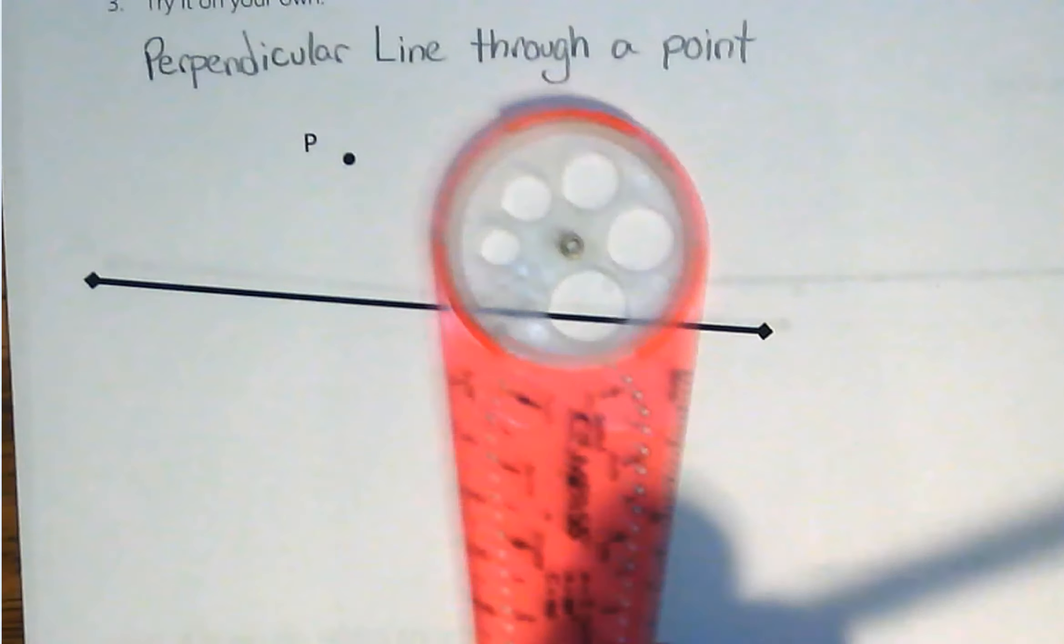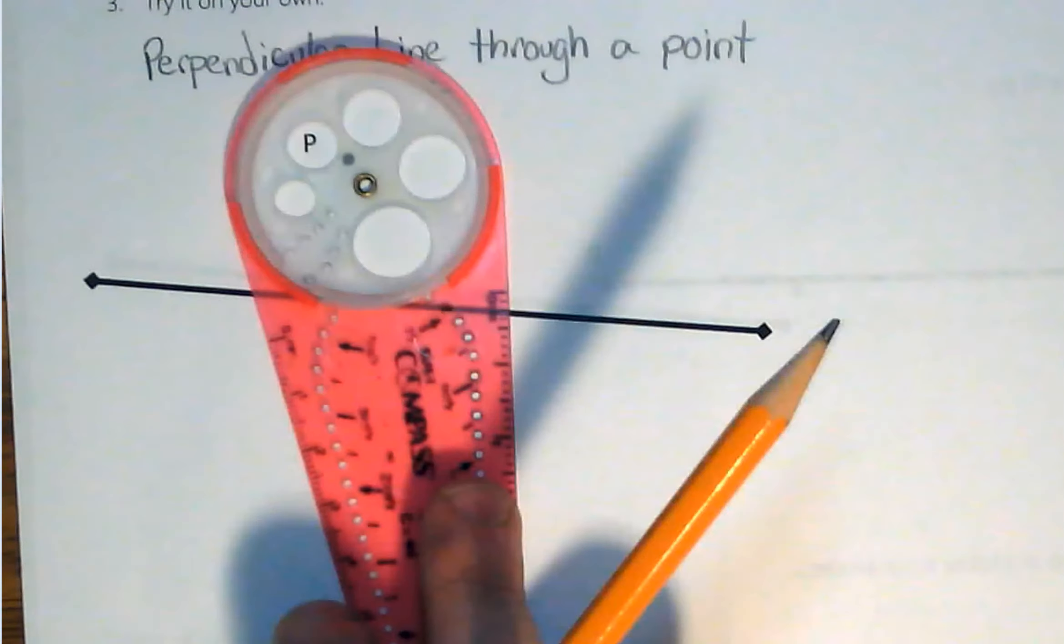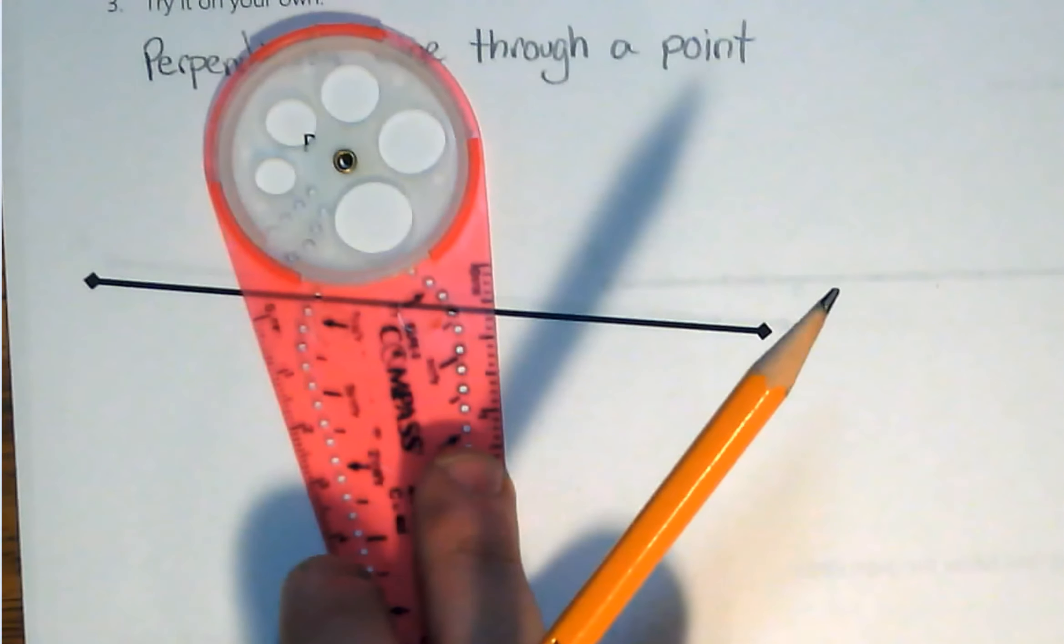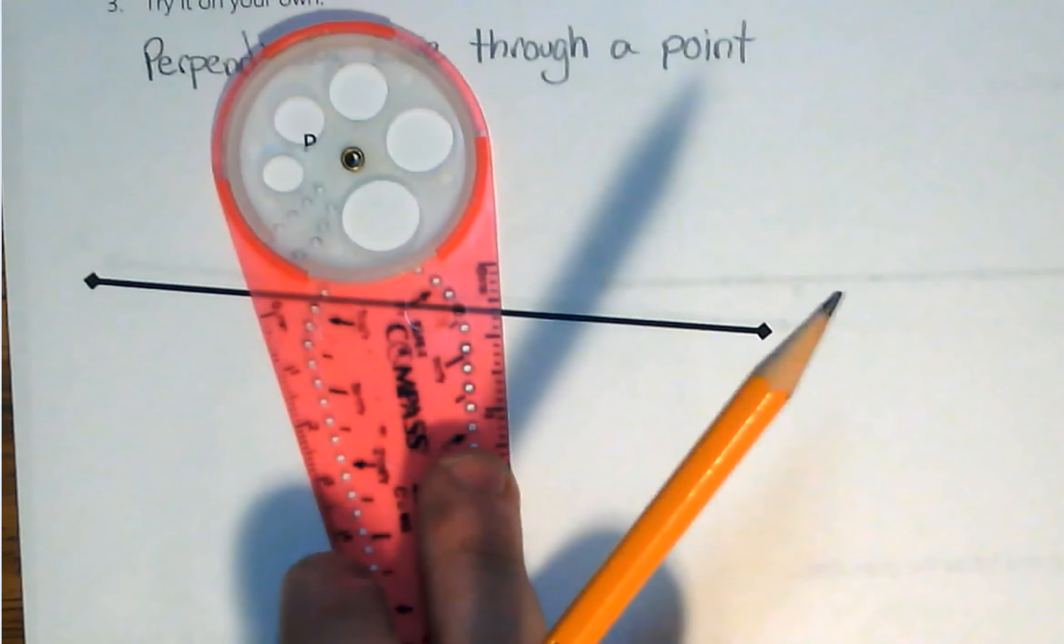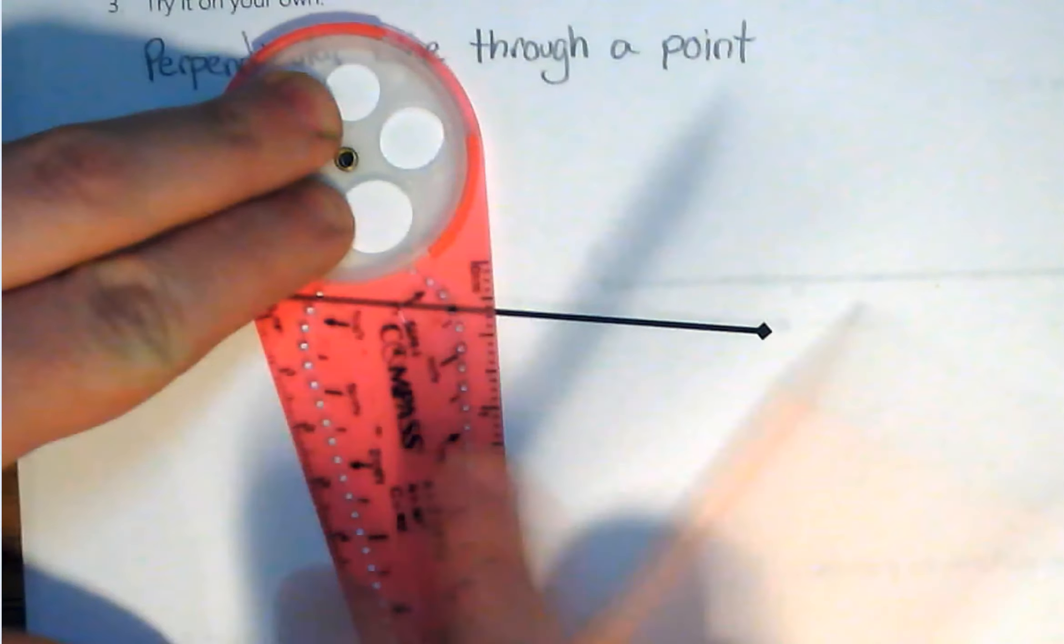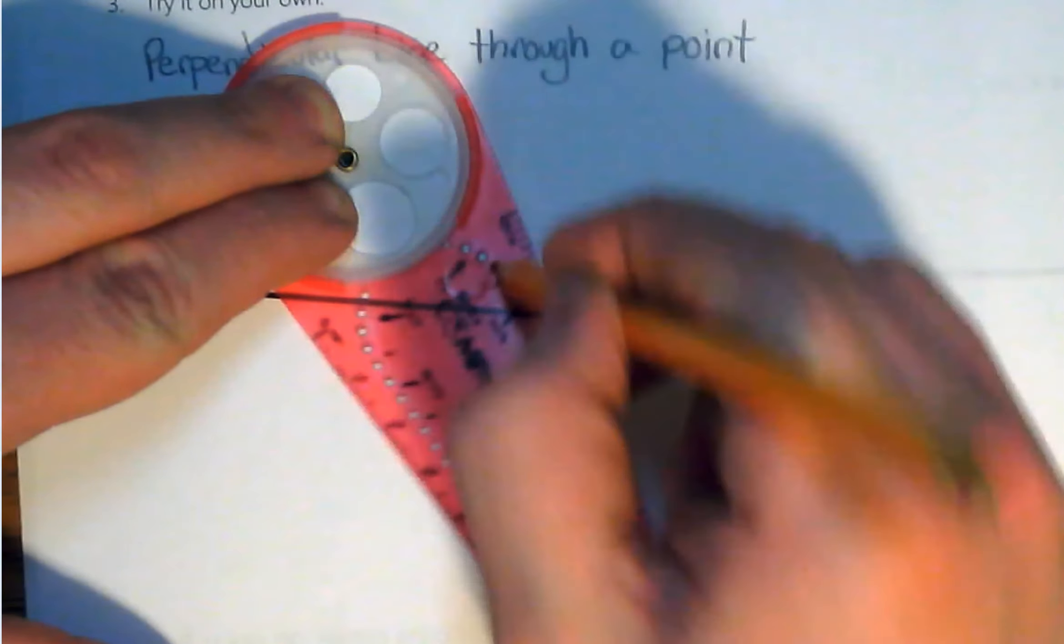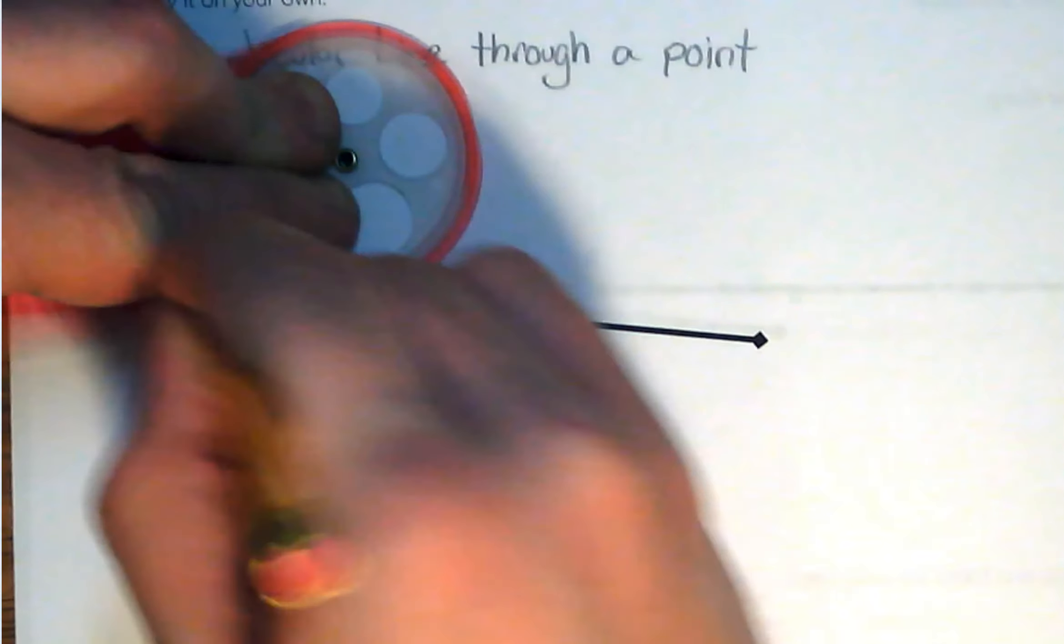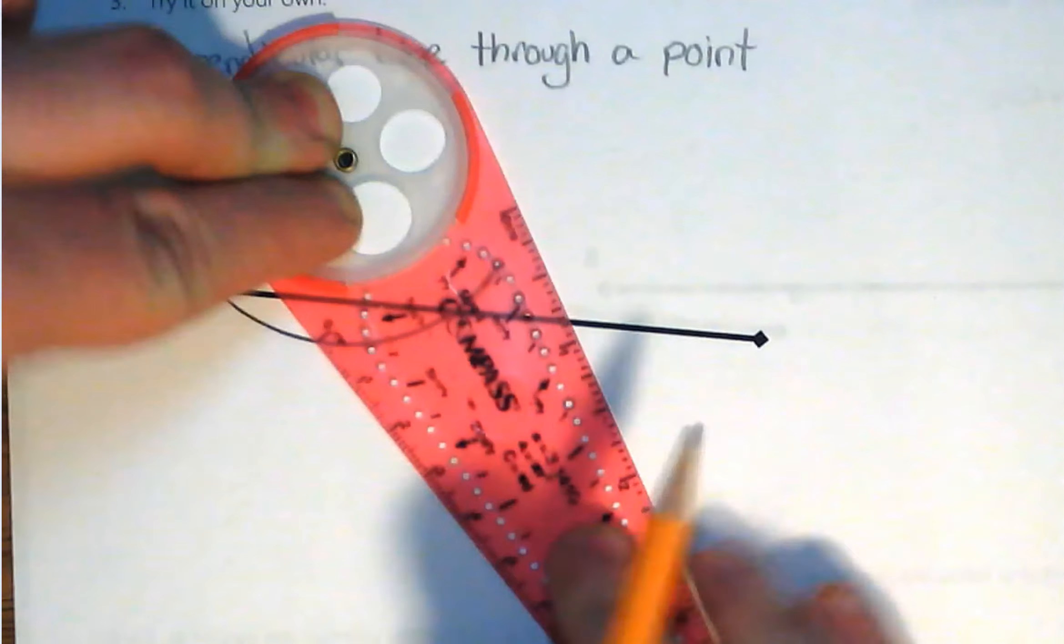Our first step is going to be put your compass center on point P. So you put your center there, make sure it's nice and center. And then what we're going to do is just draw an arc through this line. So we're going to take our pencil and just draw an arc through that line like that.